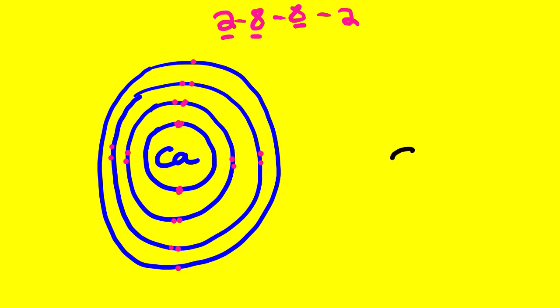Now that we can draw atomic structures, it is very simple to draw Lewis structures. A Lewis structure represents the valence electrons — we only need the symbol of the element and those valence electrons. Valence electrons are the electrons located on the outermost energy level. For calcium, the last energy level has two electrons, so the Lewis dot diagram simply shows the symbol Ca with two dots representing those two valence electrons.